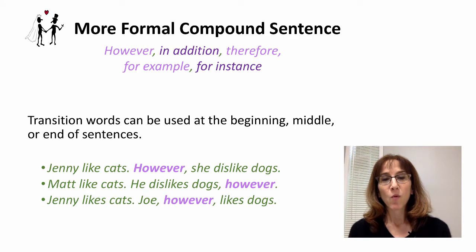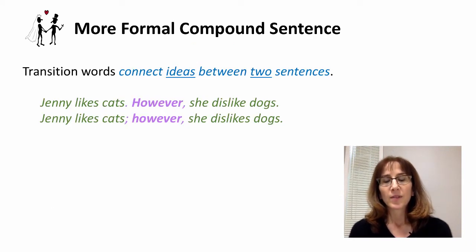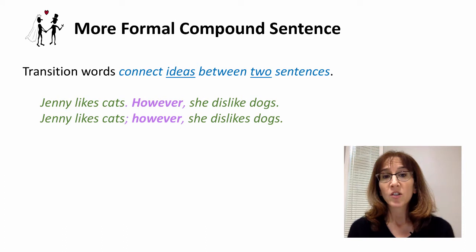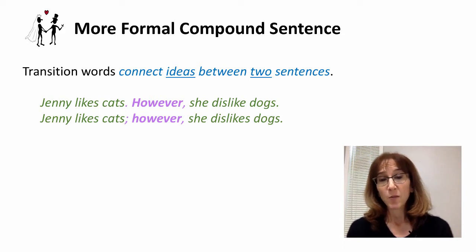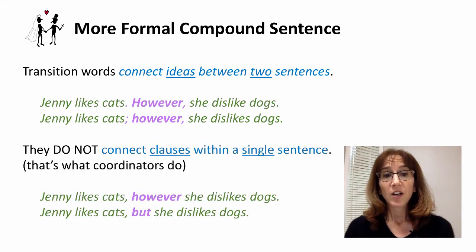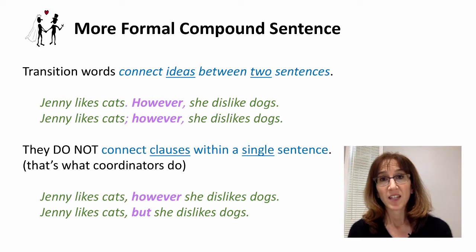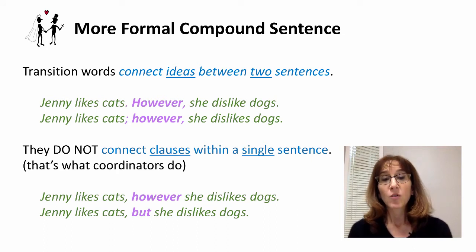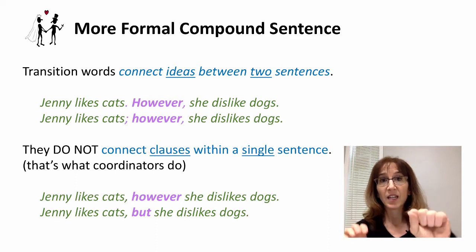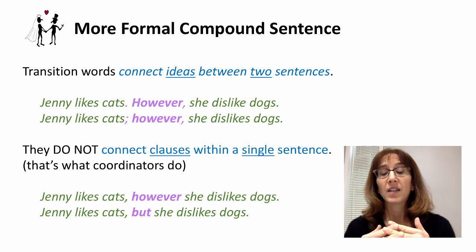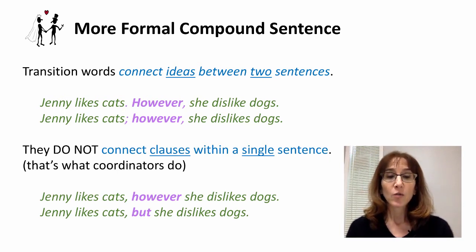I'd like to focus a bit more on the first type, where the transition word is between the ideas. The key difference between the more formal and less formal compounds is that transition words connect ideas between two sentences — they show a relationship. However, they don't connect clauses within a single sentence the way coordinators do. Coordinators can take two ideas and combine them into one sentence, but transition words are just showing the relationship.